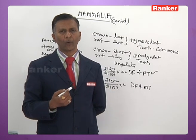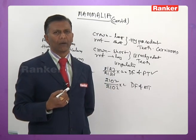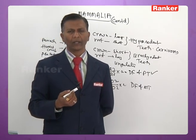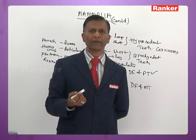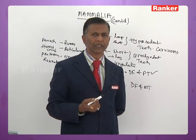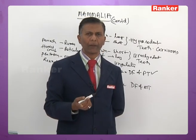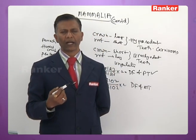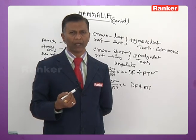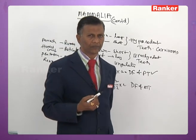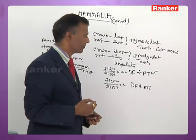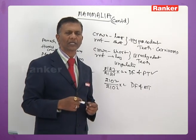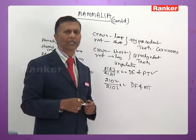The liver may be 5-lobed or 4-lobed, with a gallbladder. The stomach is divided into three regions in other mammals: cardiac stomach, fundic stomach, and pyloric stomach. These are the important modifications in the digestive system of mammals.